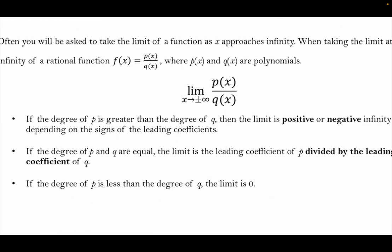If the degree of the top is bigger than the degree of the bottom, then the answer is either going to be positive or negative infinity, depending on the signs of the leading coefficients. We call that top-heavy. If it's top-heavy — meaning the power on top is bigger than the power on bottom — the limit is either going to be positive or negative infinity.